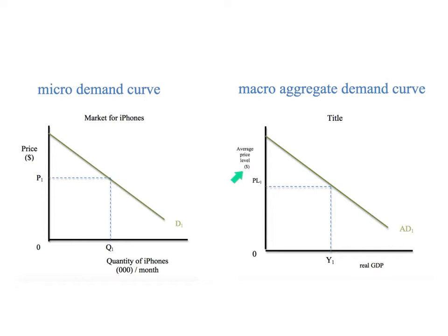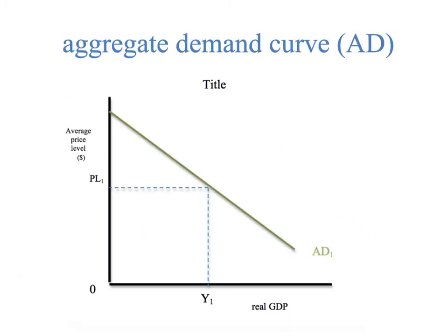This gets us to trying to figure out what makes up all of the components of this line. And if you saw the gross domestic product video, you found something very interesting: there's a relationship between gross domestic product and the components of it and the aggregate demand curve.